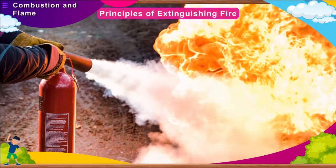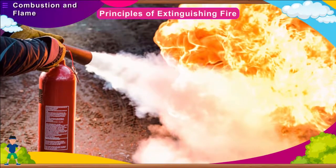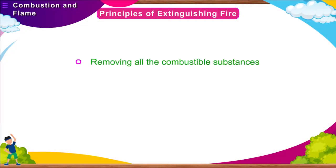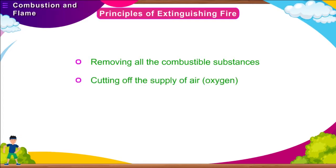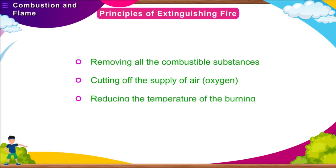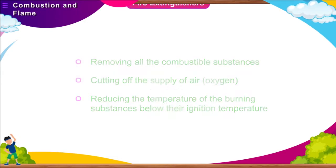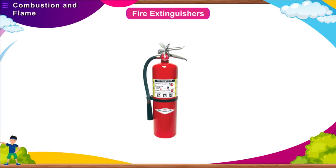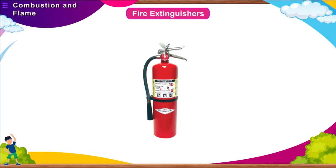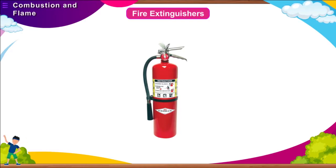A fire may be extinguished by: removing all the combustible substances, cutting off the supply of air (that is, oxygen), or reducing the temperature of the burning substances below their ignition temperature. A fire protection device that is used to extinguish or control small fires is known as a fire extinguisher.